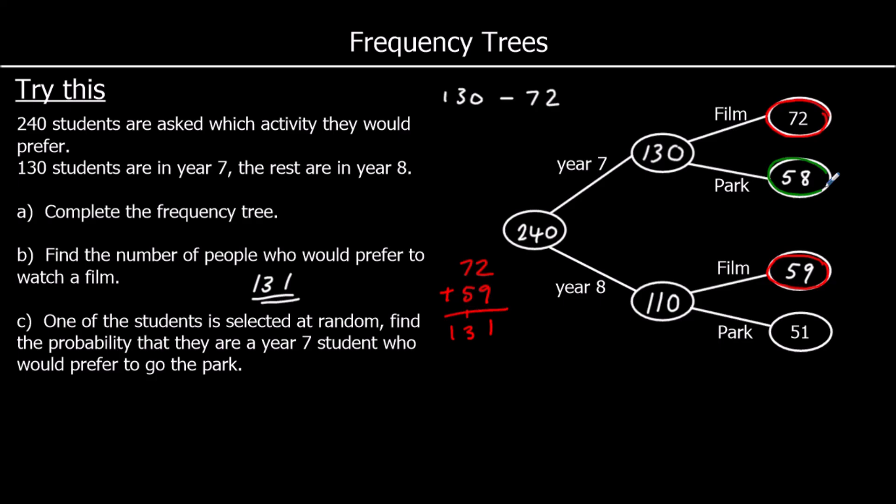So year 7 park. That's 58 of them. Out of 240 in total. So 58 out of 240, 58 over 240. We don't have to simplify it because you weren't asked to. So we can leave it as that.